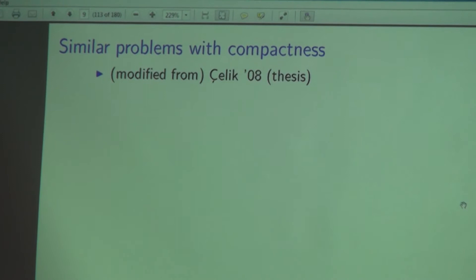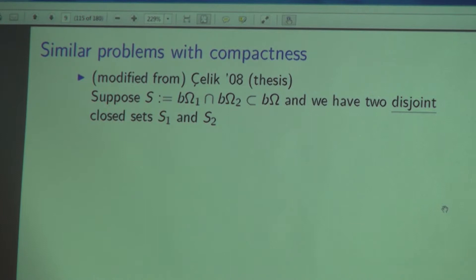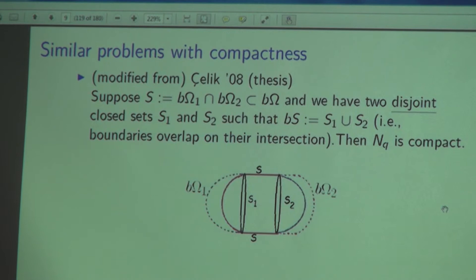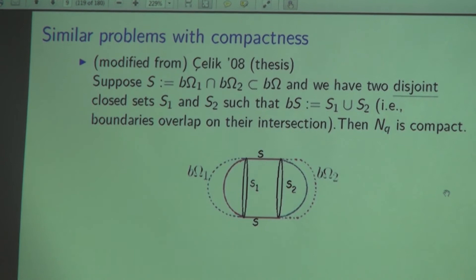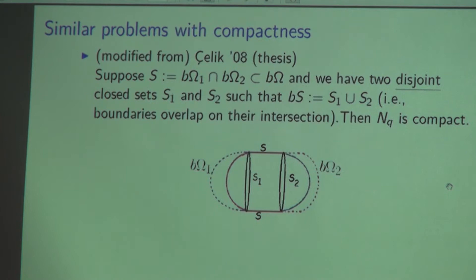A student of my advisor, Mehmet Celik, looked in his thesis at a particular case of my problem. He assumed that the boundary intersection S itself has a boundary, so there is some space in this boundary intersection, and that this boundary of S is given by the union of two closed sets — so in a sense the original boundaries are overlapping. In this case one can prove that N_Q is compact, using localization: you can put balls to cover the boundary of the intersection domain, and these balls belong to the boundaries of the assumed domains, or you can take a cutoff function that has space to vanish on S and then sum up the forms to claim the compactness estimates.